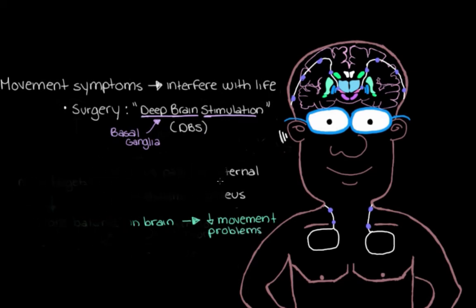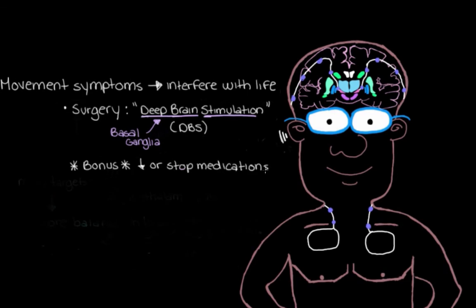One added bonus of DBS is that it often allows the person with Parkinson's disease to reduce or discontinue some of their medications. Remember how L-DOPA is kind of like a pendulum that wants to bring our patient from too little movement to normal, but after a few years it can overshoot and cause too much movement. With DBS helping to manage the movement problems in the first place, the patient can often get away with taking less L-DOPA, which can help our pendulum from swinging too far and causing too much movement.